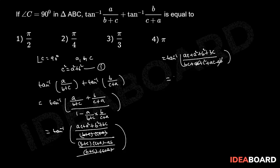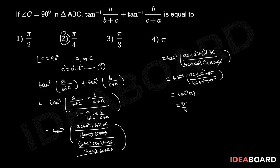AB and AB cancel. This equals tan inverse of [AC + A² + B² + BC] / [BC + C² + AC]. From equation 1, A² + B² = C², so the numerator becomes C² + AC + BC. These common terms cancel, giving tan inverse 1, which equals π/4. Therefore, option 2 is the correct option.